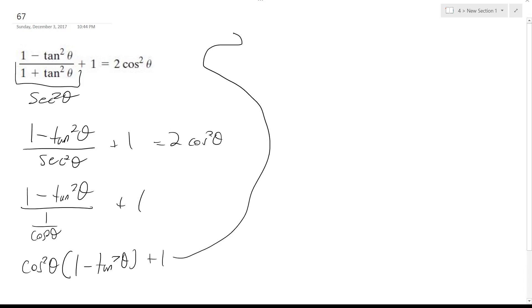Alright, so what I did is I converted 1 plus tangent squared theta on the bottom here is equal to secant squared theta, and then I converted that to 1 over cosine squared theta and I'm reciprocating that and multiplying it across this whole thing.